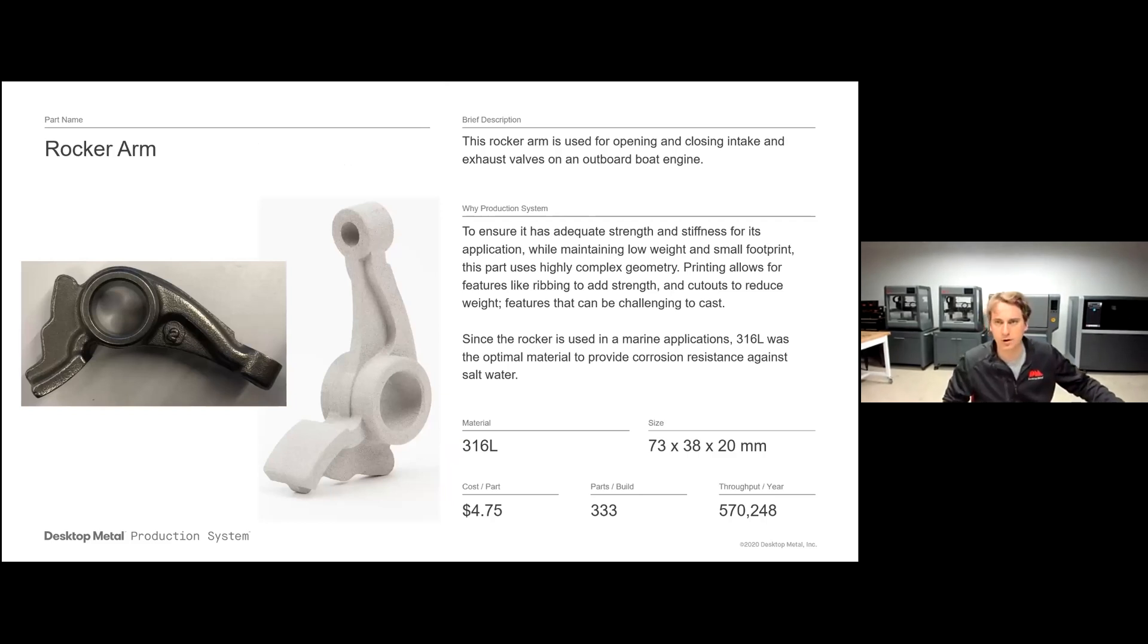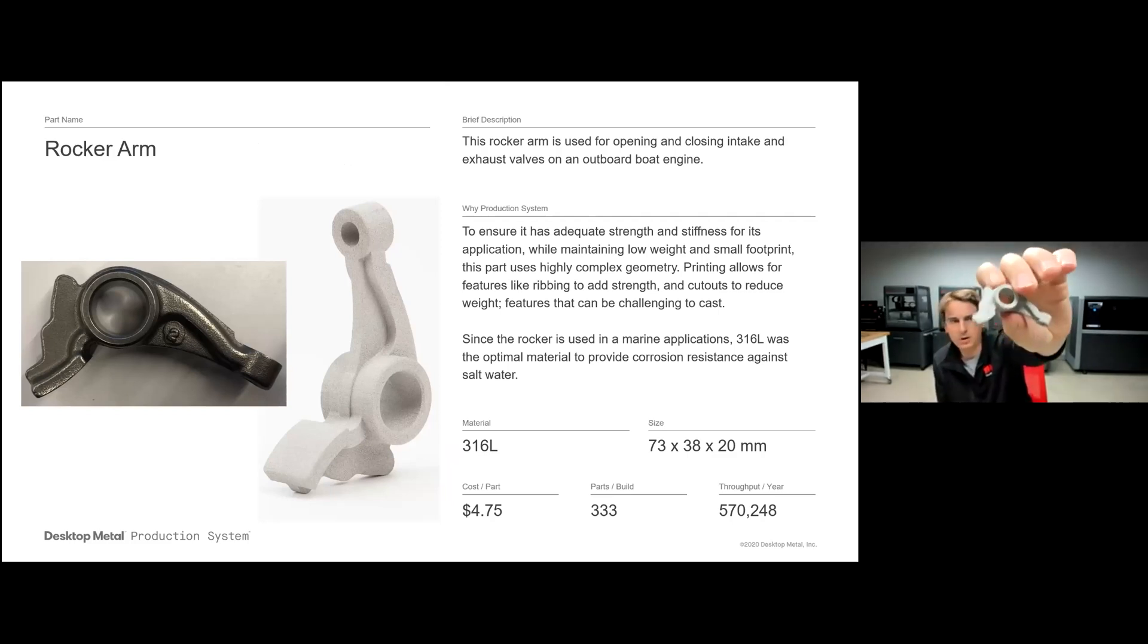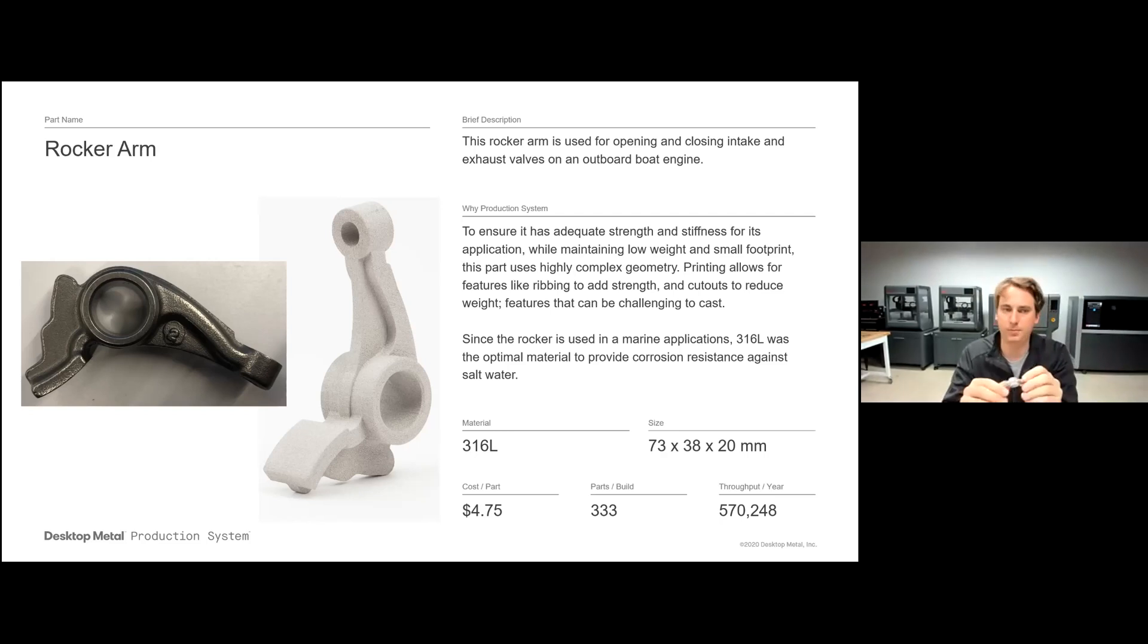The first part we're going to look at here is this rocker arm. This is used for opening and closing the intake valves on an outboard engine. This part was printed on our Shop System, the system you can see over my left. Of course, this needs to be made out of metal for adequate strength and stiffness as well as temperature resistance requirements. This part was actually printed on the Production System. On the Production System, the cost is just $4.75 per part. So we're really able to get that cost per part down to a low enough that we're really able to compete with casting. This part is able to do over 330 parts per build and over 570,000 of these parts per year. So you can see we're really able to get that cost down and that volume up to allow us to compete with traditional casting.